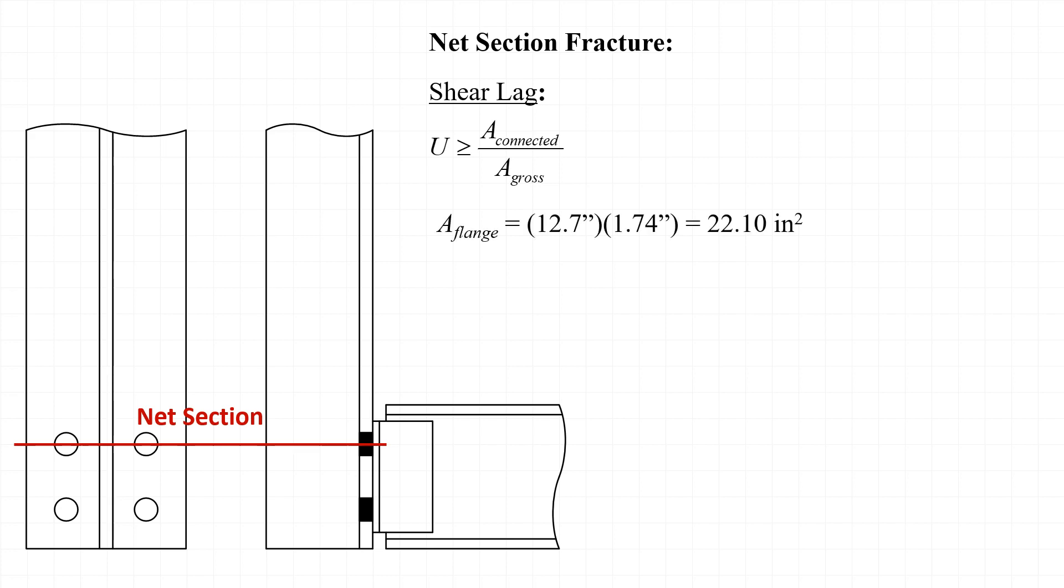In this case, the area of the connected elements is the area of the flange, which has a breadth of 12.7 inches and a thickness of 1.74 inches, so the flange has an area of 22.10 inches squared. Taking the ratio of the area of the flange to the gross area of the section, we see that we get a value of 0.7892, so that means that we can take U equal to 0.7892 for this member.